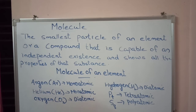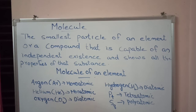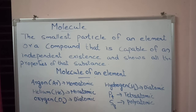Phosphorus is an example of a tetraatomic molecule. Sulfur is an example of a polyatomic molecule. The atomicity of oxygen is 2, because two atoms combine together to form an oxygen molecule. So argon, helium, etc. are examples of monoatomic molecules. Oxygen, hydrogen, etc. are examples of diatomic molecules. Phosphorus is an example of a tetraatomic molecule, and sulfur is an example of a polyatomic molecule.